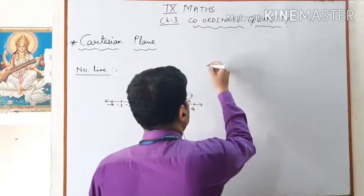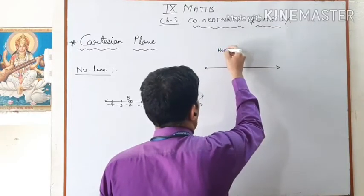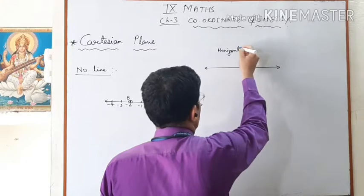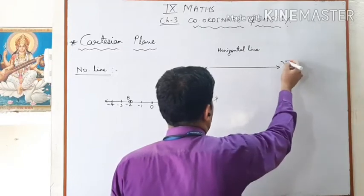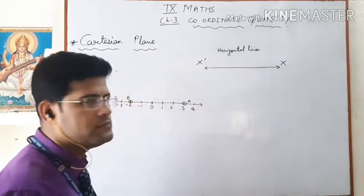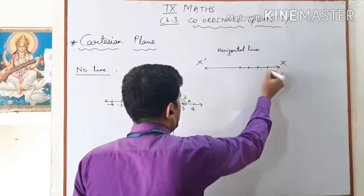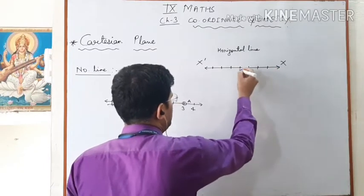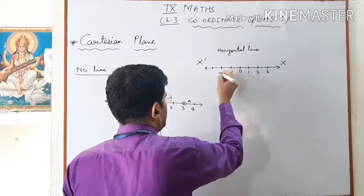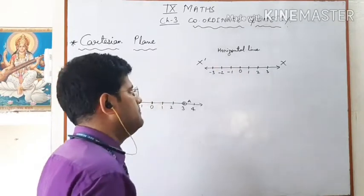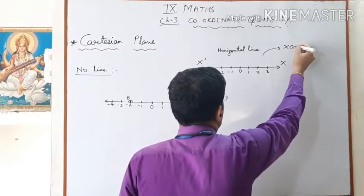What Descartes did with this number system or number line: he imagined two lines. The first line is horizontal — this is the horizontal line. He named this line x, x'. He treated this horizontal line as a number line, putting 0 at the middle, with 1, 2, 3 on the right hand, and minus 1, minus 2, minus 3 on the left.